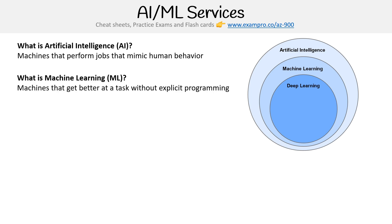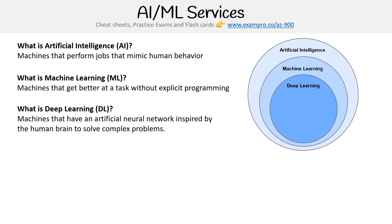Then you have machine learning, and this is where machines get better at a task without explicit programming — they are smart enough to learn on their own. Then you have deep learning, where machines have an artificial neural network inspired by the human brain to solve complex problems. It's like the power of the human brain, quite close to it. And AI could be leveraging ML and deep learning.